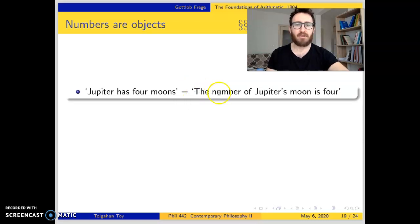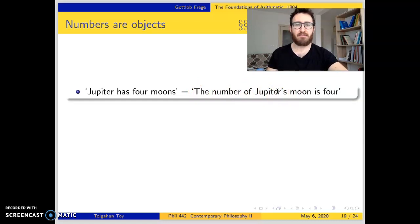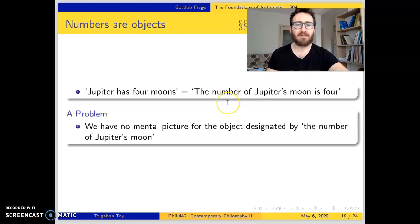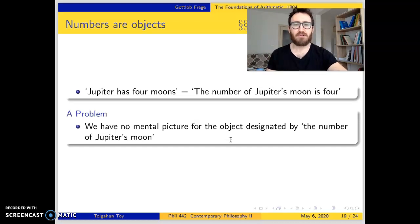Like in this example, 'the number of Jupiter's moons is 4,' the expression 'the number of Jupiter's moons' refers to an object. But if numbers are objects, then why don't we have any mental picture for the object designated by the number of Jupiter's moons, or the number of presidents of France, or the number of Venus's moons, or the number 4? Why don't we have any mental picture for numbers?